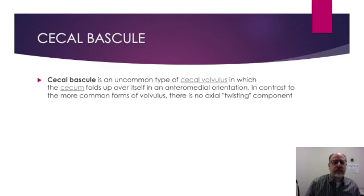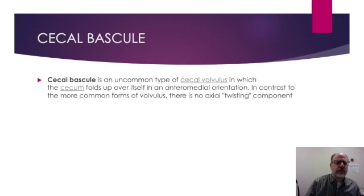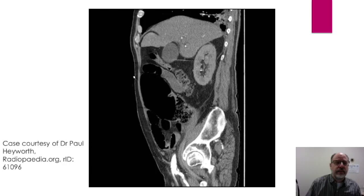Another less common type of cecal volvulus is termed the cecum bascule, in which the cecum folds up over itself into an anteromedial location. In contrast to the more common type of volvulus, there is no twisting component. This is often an intermittent finding, also called a mobile cecum, and can cause intermittent obstruction. A sagittal CT image shows a dilated loop of cecum in the anterior aspect of the abdomen projecting towards the right upper quadrant adjacent to the gallbladder. The cecum is mildly dilated, but there is no twisting as is typically seen with a cecal volvulus.